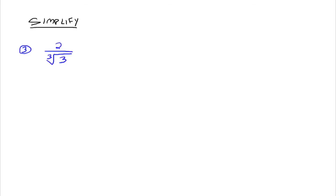Now with cube roots, we've got a cube root in the denominator. With square roots, you just multiply the top and bottom by the same square root, because the square root of a number times the square root of the same number gives you the square root of a perfect square, and that's what eliminates the square root. But with cube roots, you have to think about it a little bit more carefully. We want to multiply the cube root of 3 times something so that we will get the cube root of a perfect cube in the end.